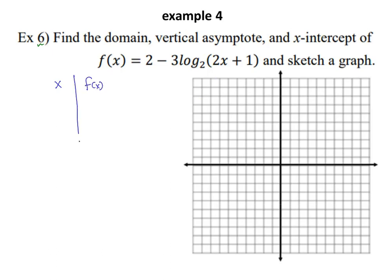We'll use a table of values. First, identify the vertical asymptote — I only look at the argument for the vertical asymptote. What value of x zeros out the argument? For 2x plus 1 equals zero, that gives x equals negative one-half. So the vertical asymptote is at x equals negative one-half. Since we have no horizontal reflection, the graph races off to the right — either going up and to the right or down and to the right.